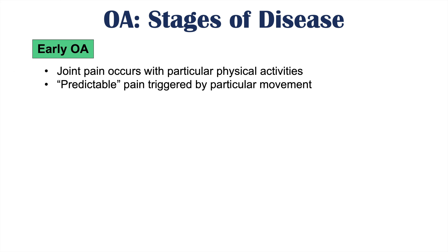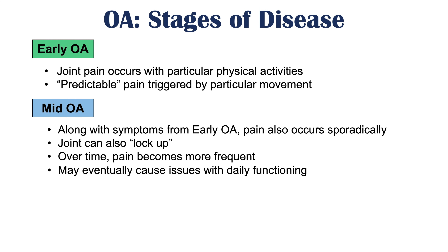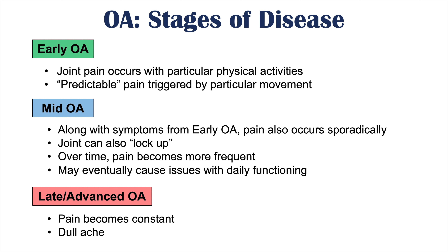There are three stages of osteoarthritis. In early osteoarthritis, joint pain occurs with specific physical activities in a predictable, movement-triggered pattern. In mid-stage osteoarthritis, pain still occurs with activity but also happens sporadically; the joint can lock up and pain becomes more frequent, eventually interfering with daily functioning. In late or advanced osteoarthritis, pain becomes constant, typically a dull ache, and the joint has very reduced range of motion.